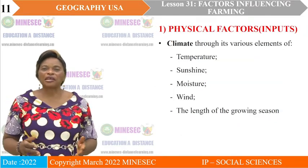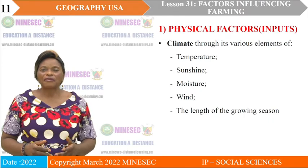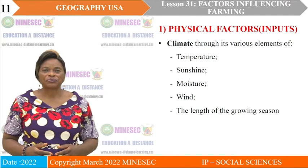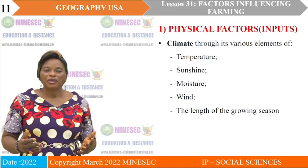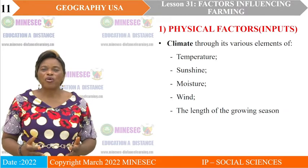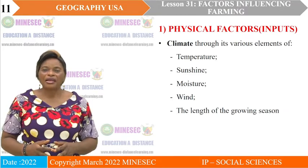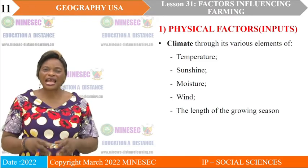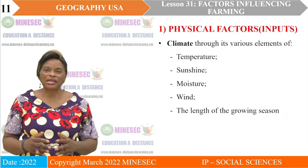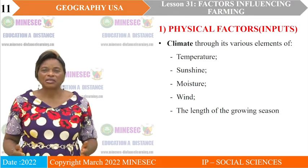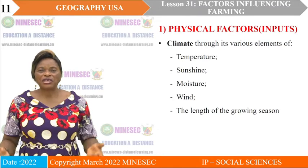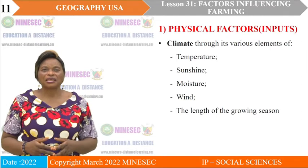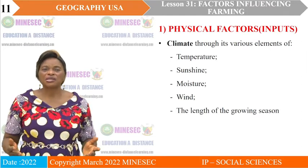We are going to begin by looking at the physical factors, which we can also call inputs into the farming system. Climate is a very important physical factor — it is even the most important factor influencing agriculture because it affects man's activities directly, and indirectly it affects the animal kingdom and vegetation. We will begin by looking at climate through its element of temperature.